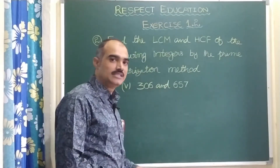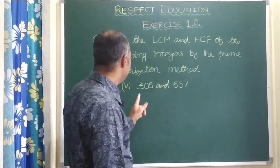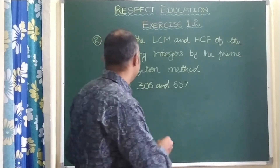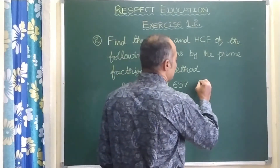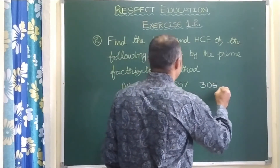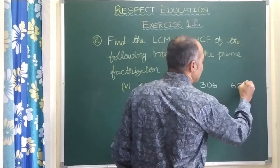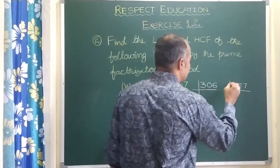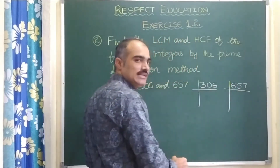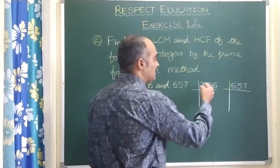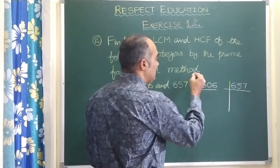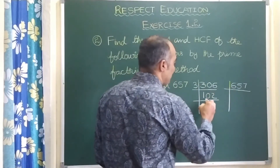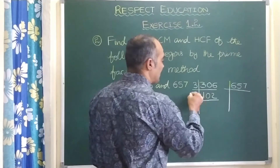Now let us see the next bit, that is the fifth bit: 306 and 657. Let us find their prime factors. For 306: digit sum 3+0+6=9, so it can be divided by 3. It gives 102. Again 1+0+2=3, so divide again by 3 to get 34. Then try with 2 to get 17. 7 is a prime number, so we can leave it.